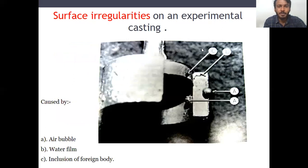Common casting irregularities include surface irregularities. Air bubbles in the investment produce nodules on the casting surface. Water fill can cause small depressions. Foreign bodies can also cause small depressions in the cast. Small nodules on the casting are caused by air bubbles that become attached to the pattern during or subsequent to the investment procedure. Removal of nodules on margins or internal surfaces might pose marginal discrepancy or alter the fit of the casting.